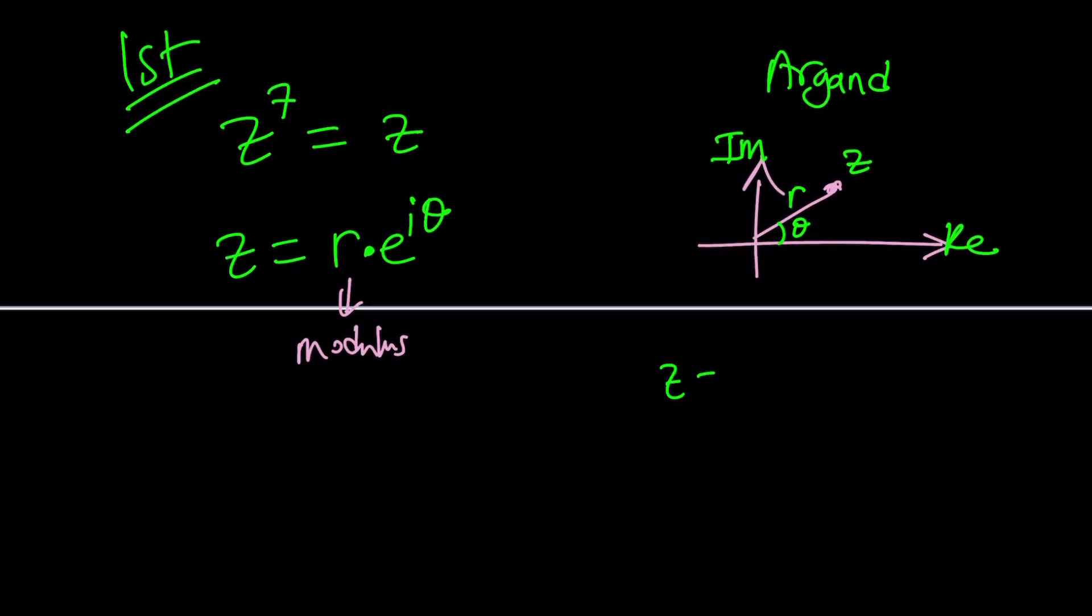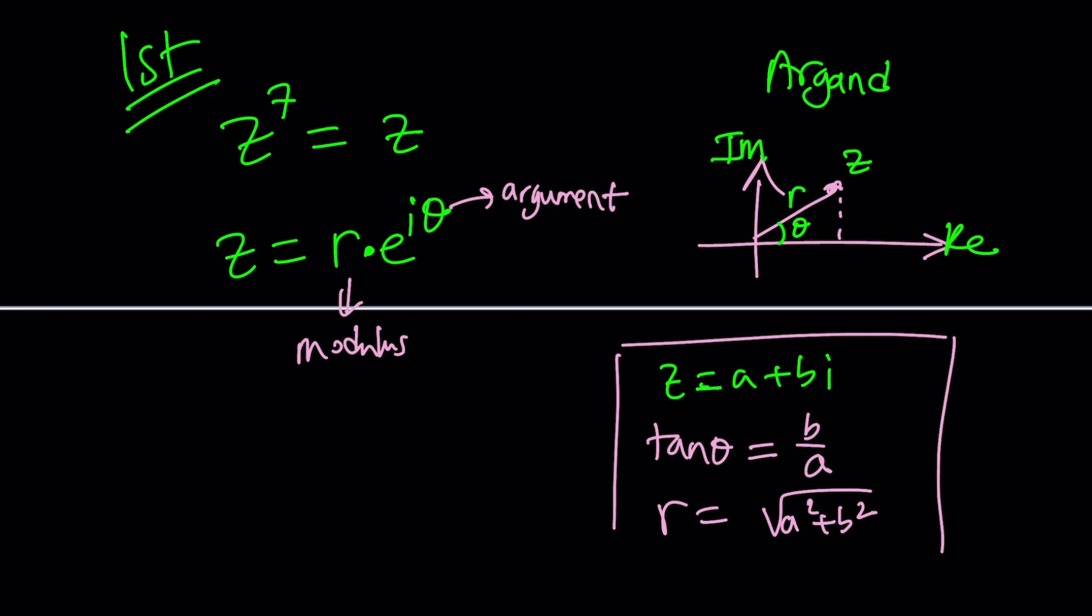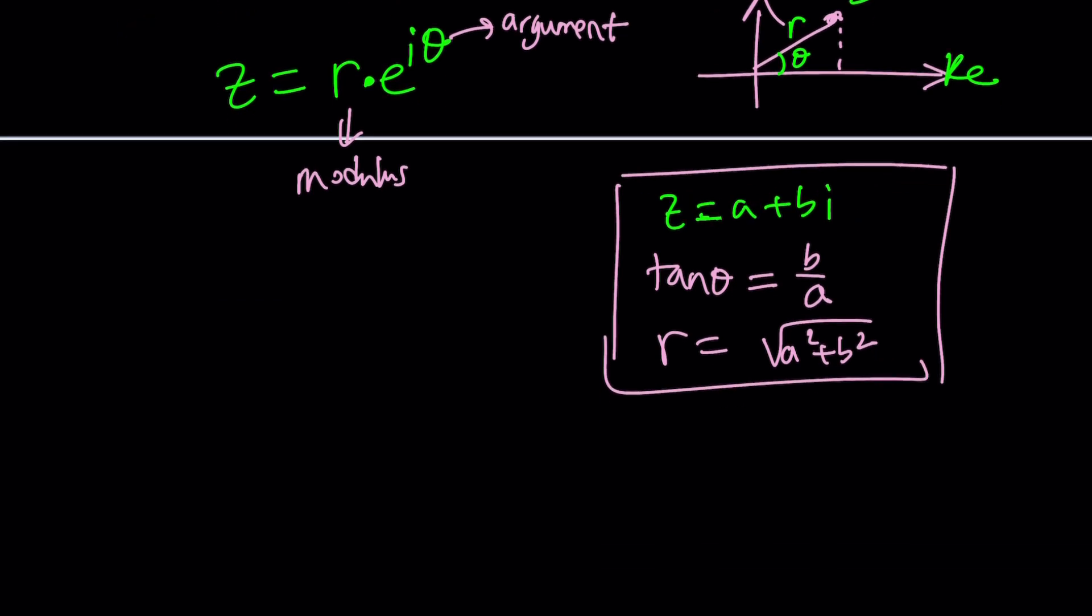This is called the real axis and this is called the imaginary axis. The whole thing is called the Argand plane. Theta is called the argument or the angle. If z can be written as a plus bi, then tangent theta can be written as b over a. From the Pythagorean theorem, r can be written as square root of a squared plus b squared.